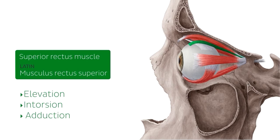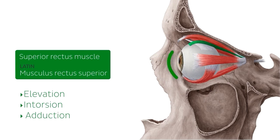Adduction refers to the movement towards the median plane of the body, and if we look at this diagram and where the muscles attach, you can imagine the muscle pulling the eye inward as if you're trying to look at your nose. So I'm just going to draw this arrow just to help you visualize it. In adduction, the superior rectus also helps with elevation, which I'm going to illustrate with my arrow here.